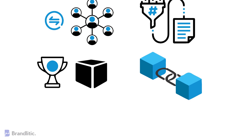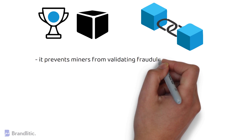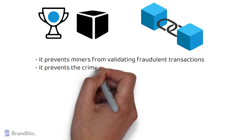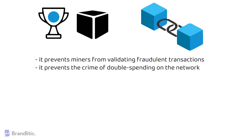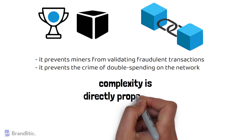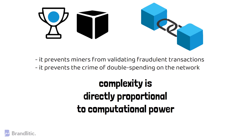A part of every new hash created contains the hash value of the previous transaction in the block, and it does two things: it prevents miners from validating fraudulent transactions, and it prevents the crime of double-spending on the network. The complexity of the Proof-of-Work puzzles also depends on the number of nodes in the network, and a puzzle's complexity is directly proportional to the computational power required to solve it, which eventually causes certain severe ramifications for a Proof-of-Work-based blockchain.